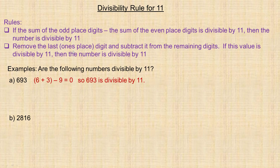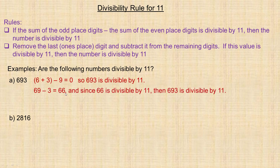Using the second method on 693: take the last digit, 3, and subtract it from the remaining number, 69. So 69 minus 3 equals 66, and since 66 is divisible by 11, that confirms 693 is divisible by 11.